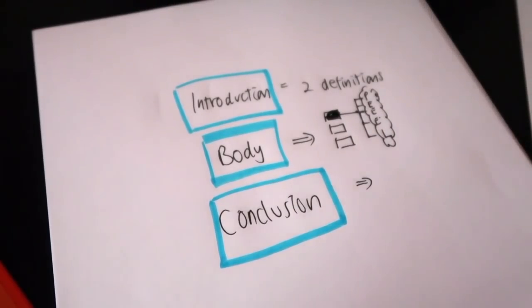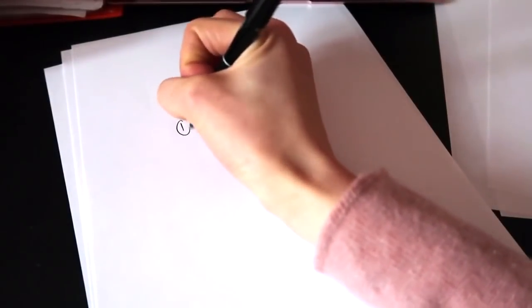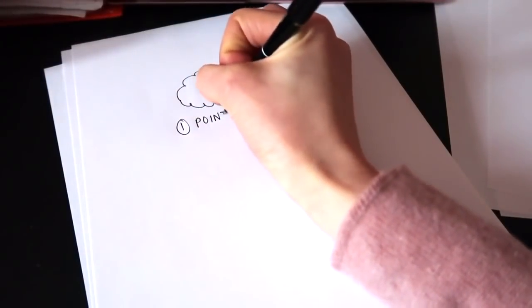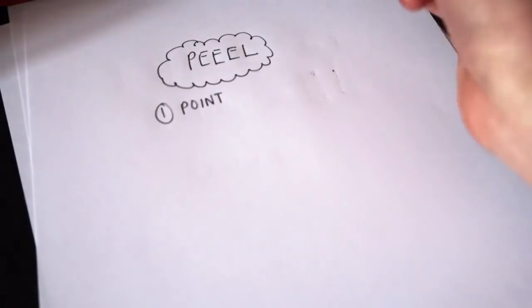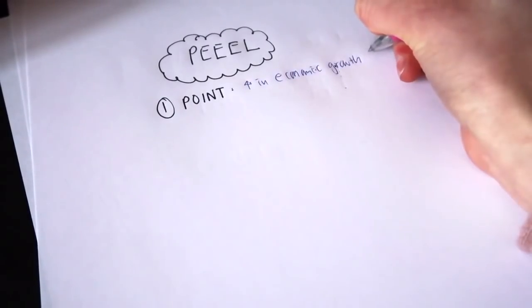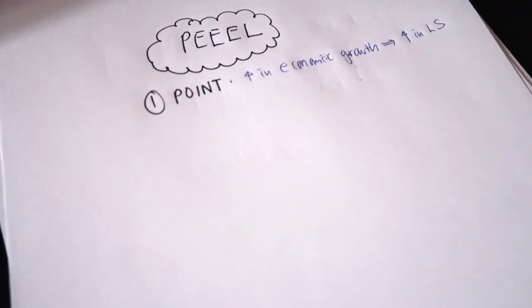Now let's get into the PEEL framework. The PEEL framework is super simple but super useful. First, you make your Point — very brief, straight to the point. For example, if we're talking about the benefits of economic growth, the first point might be that an increase in economic growth will lead to a rise in living standards. That's your point. Brief.